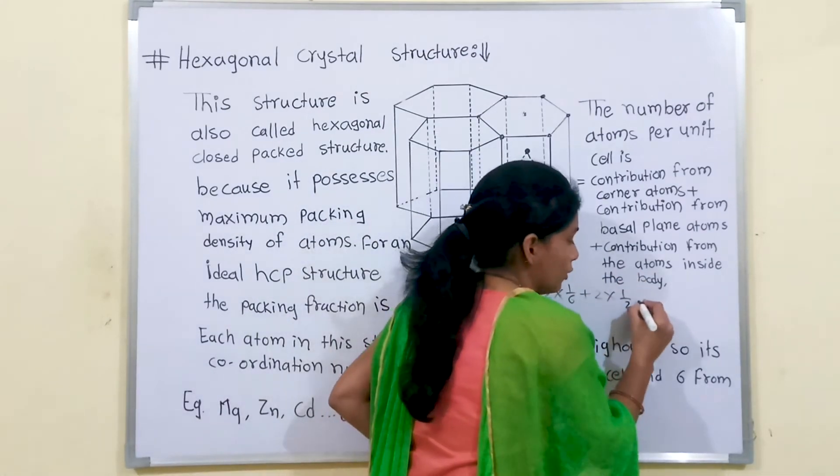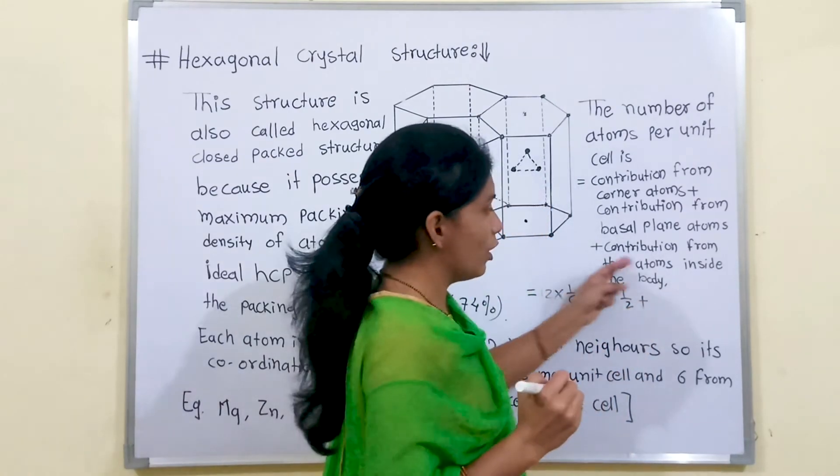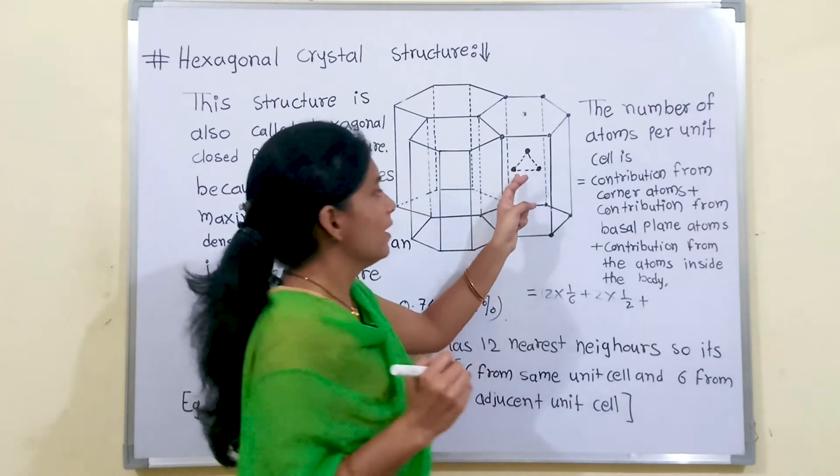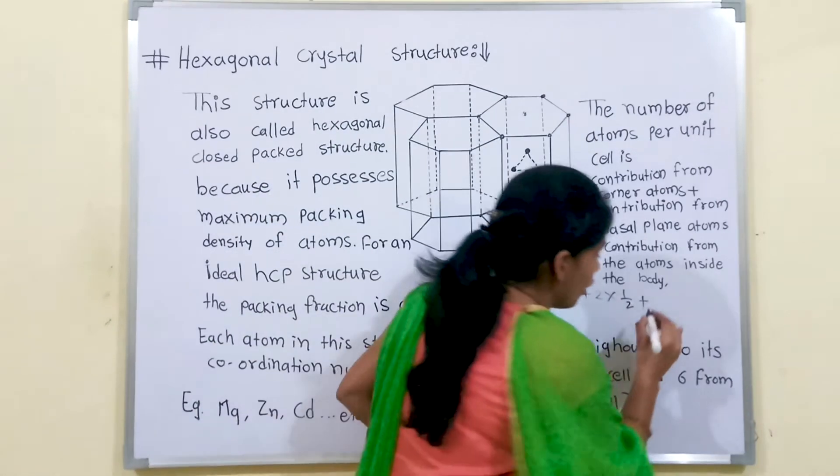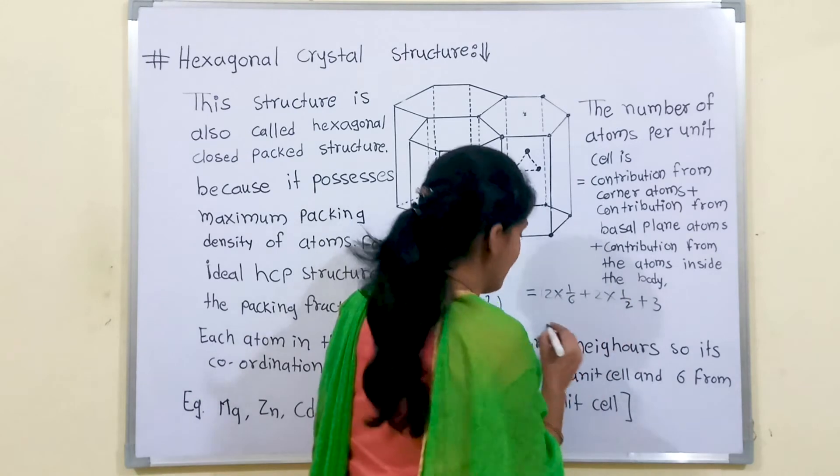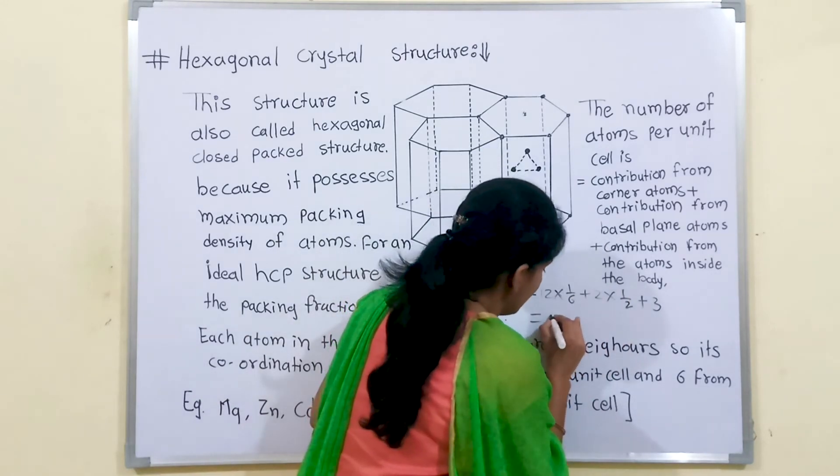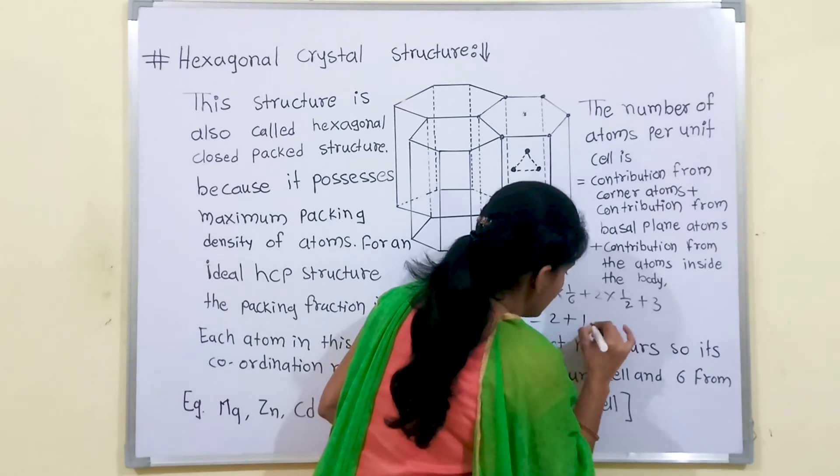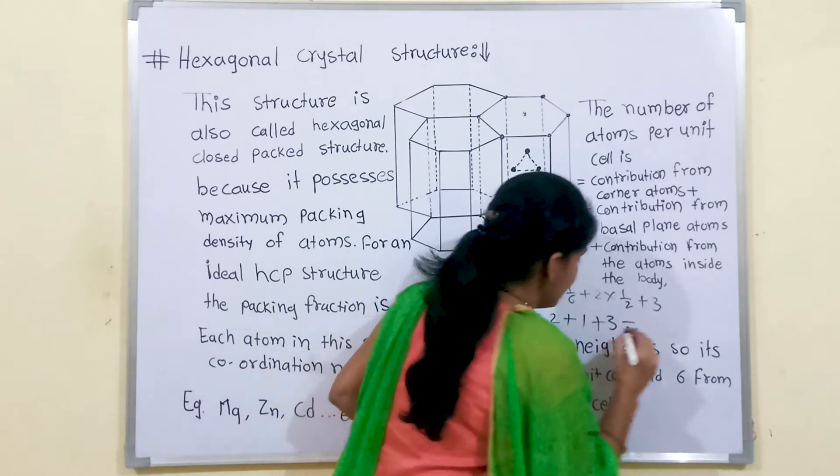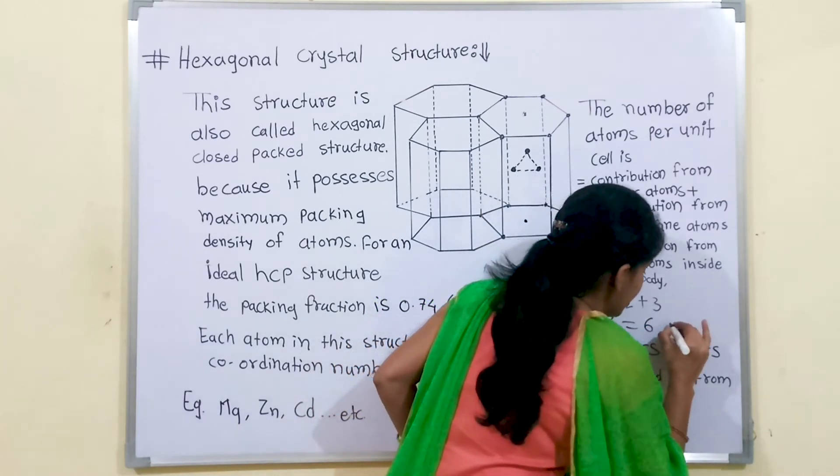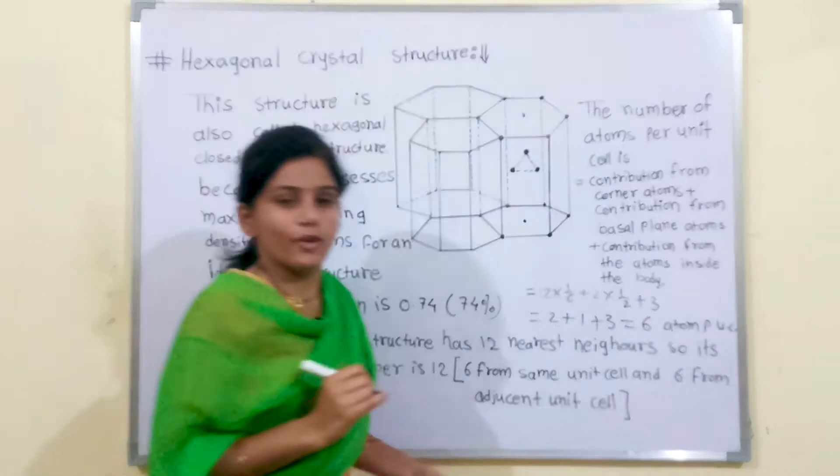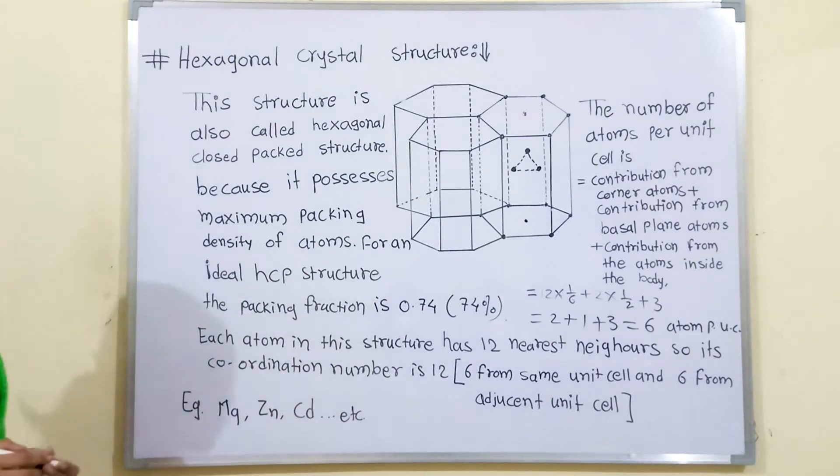2 into 1 by 2 plus contribution from the atom inside the body. Here we can see there are 3 atoms in the prism, so we can write 3. This is 2 plus 1 plus 3, that means there are 6 atoms per unit cell for the HCP crystal structure.